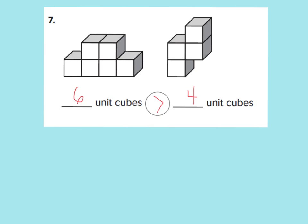We have six cubes because, as you can see here, we have one cube, two, three, four, five, and six. And on the second one, we have one cube, two cubes, three cubes, and four cubes.